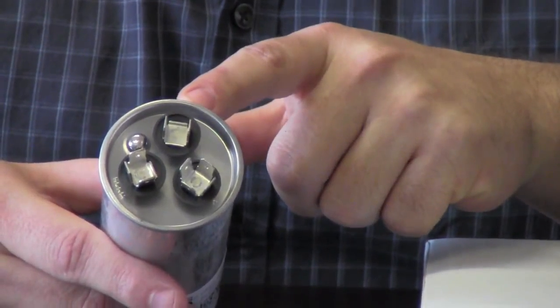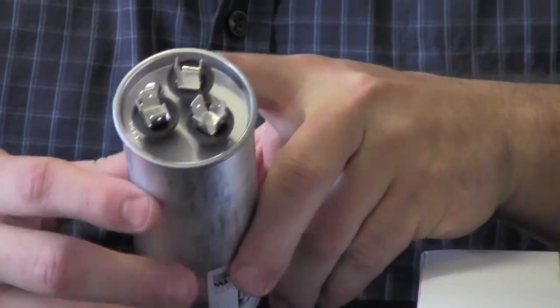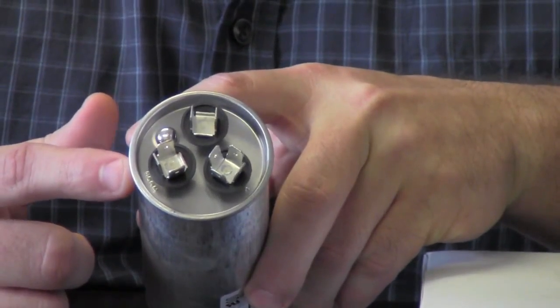At the top you got the fan. That's for your fan motor. That's where you're going to hook up. Over here you got the Herm which goes to your compressor.